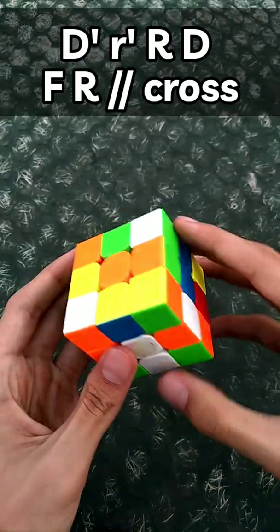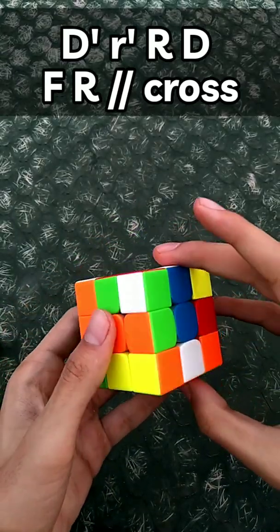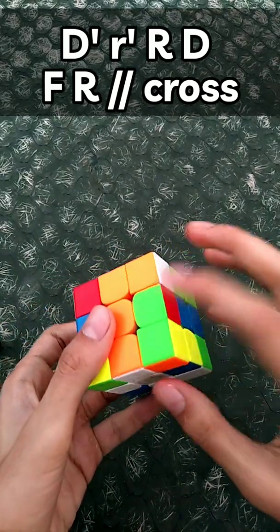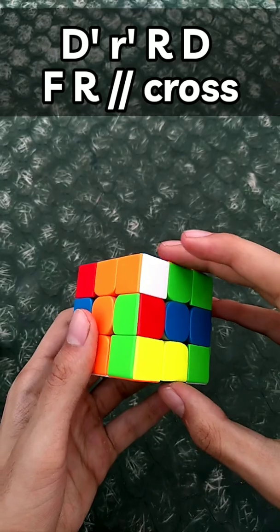Now he did a wide r prime and R to solve the red piece, then D, F to solve orange. As you can see, this pair was preserved over here, but then he did R.